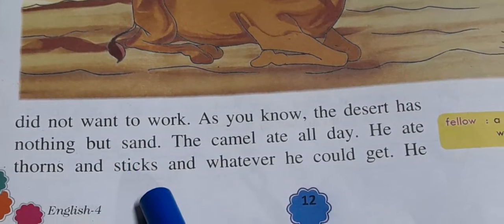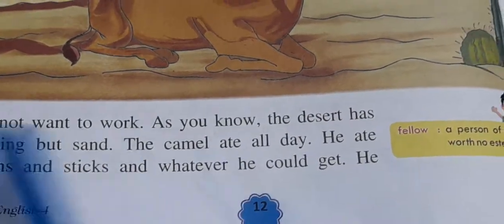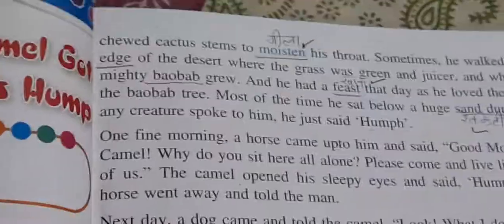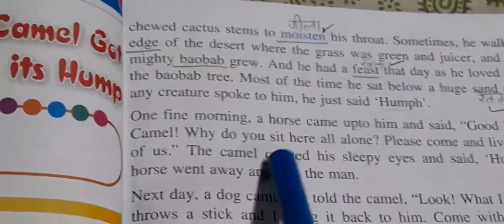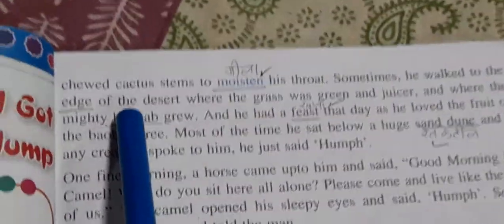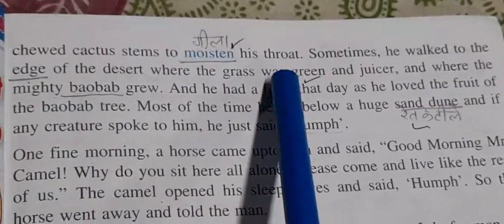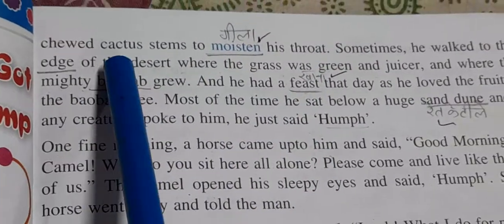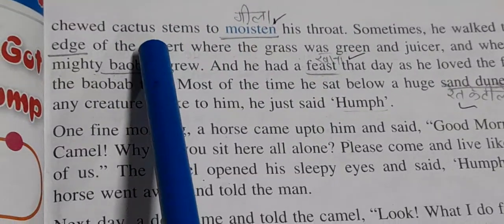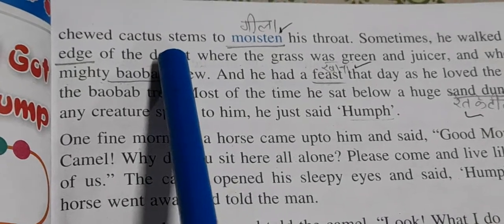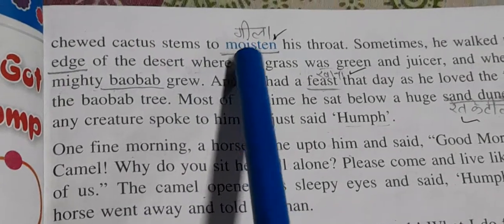He ate thorns and sticks and whatever he could get. He twisted cactus stem to moisten his throat — woh cactus ke stem khaata tha, cactus jo hota hai jis ke andar thoda sa paani rehta hai, toh usko khaata tha taake usko gala geela ho.